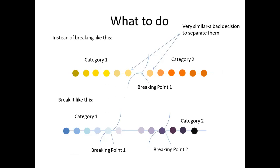Let's understand what we mean using an example. We have a data set shown as colored dots. If we split this data set in the middle at the breakpoint, we can see that the two values closest to it are very similar to each other — so similar they are difficult to distinguish. Categorizing these similar values into different categories does not make much sense. Those which are far away from the split point are very different from each other.